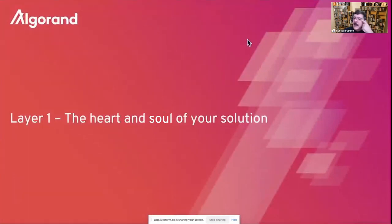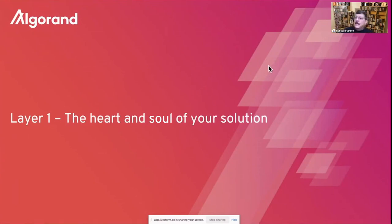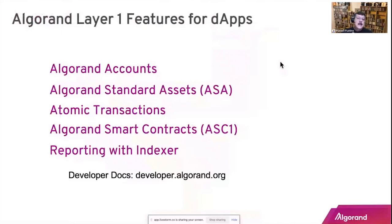Now a high-level look at the heart and soul of your solution, which is layer one. Layer one features for DApps include Algorand accounts, Algorand standard assets which are fungible and non-fungible tokens, atomic transactions where everything works or none of it does, and Algorand smart contracts which provide logic as to whether or not the transaction gets signed and approved. There are also some reporting capabilities. All this information is at developer.algorand.org.